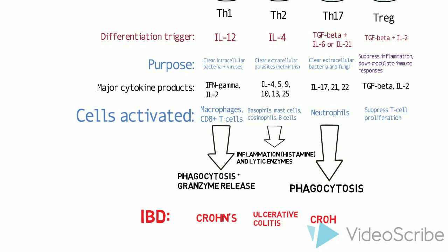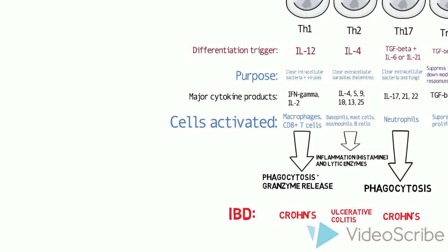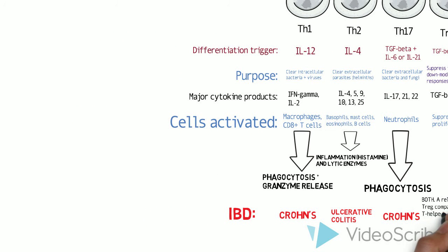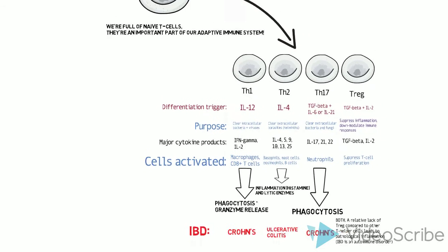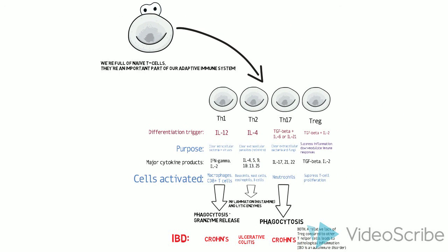When it comes to inflammatory bowel disease, Th1 and Th17 are implicated in Crohn's disease, and Th2 is found to be implicated in ulcerative colitis. The relative lack of Treg compared to the other T helper cells leads to a sort of runaway activation of each type of T helper cell, leading to these conditions.